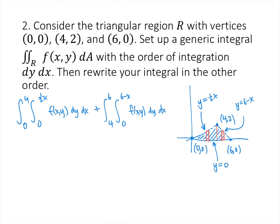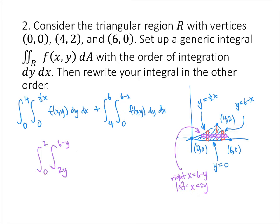Now if I were to slice the other direction — slice horizontally — the situation would be a little different. If I slice horizontally, my slices are consistent from the bottom to the top of the region. The left end of this slice rectangle is on y equals one-half x, which is x equals 2y, and the right end is on y equals 6 minus x, which is x equals 6 minus y. So I only need one integral here. The inner integral goes from 2y to 6 minus y, and the outer integral goes from 0 to 2 — my generic function f(x, y) in the order dx dy.